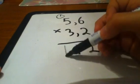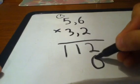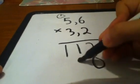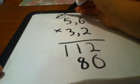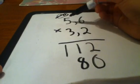Put a 0 here. Then you've got 3 times 6, 18. Take out this one, you put another 1. 3 and 5, 15, and then 16.